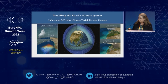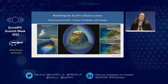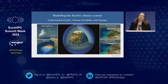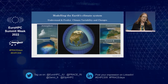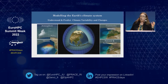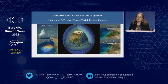You also have natural and anthropogenic forcings. The natural ones are typically solar activity and volcanoes. The anthropogenic ones are what we emit in terms of greenhouse gases, but also fine particles called aerosols. All of that is represented in the system.